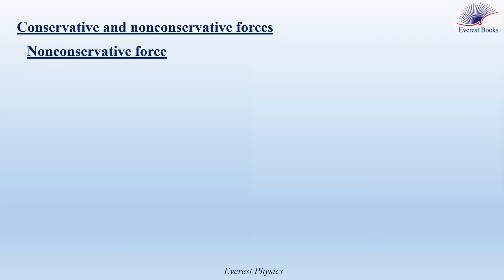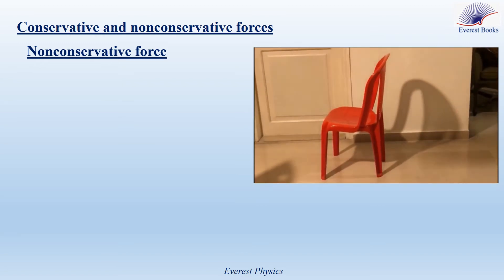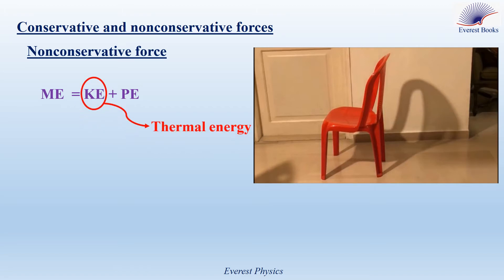Now let's start with the non-conservative forces. Observe this chair. The chair is pushed on the ground, it travels a certain distance, and then it stops. The chair stops under the action of the friction force. Consider the system chair-Earth. The mechanical energy of the system is given by ME = KE + PE. The work done by the friction force results in a transformation of the kinetic energy into thermal energy. But thermal energy is not part of the mechanical energy, so the work done by the friction force results in a decrease in the mechanical energy. The friction force is an example of a non-conservative force.